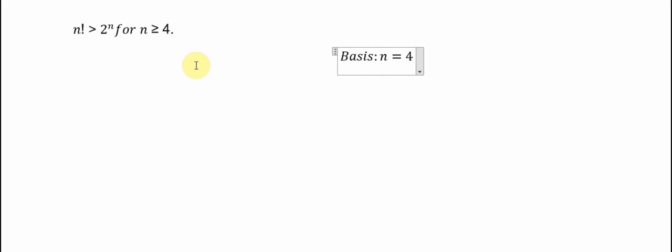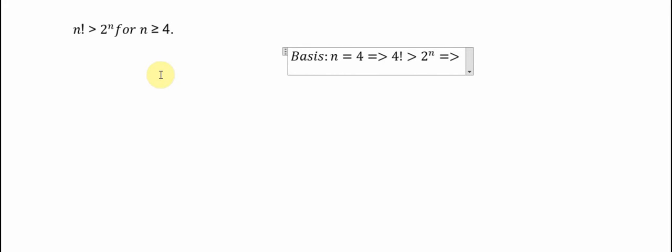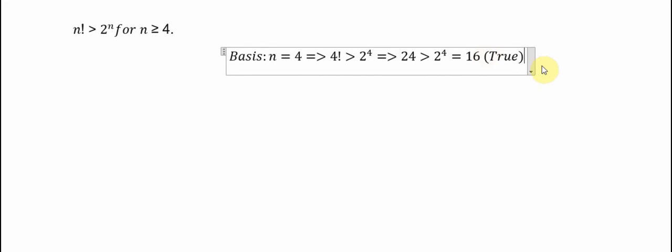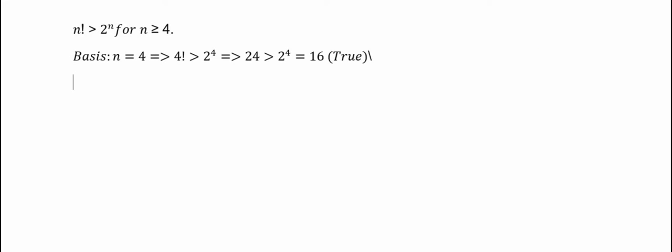equal to 4, because 4 is the lowest number here, and n should be an integer — that's why we need to choose the lowest integer, which is 4. We put 4 in here: 4 factorial is greater than 2 to the power n. We get 24 is greater than 2 to the power 4, and 2 to the power 4 is 16, so that is true.